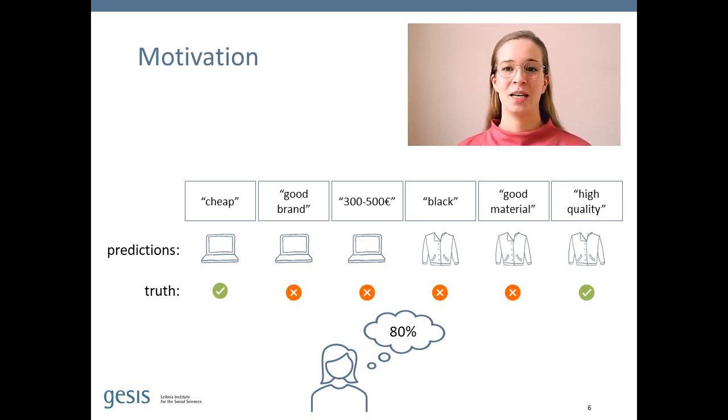And the ambiguity is data point specific. So you might have a data point that is very clear and easy to label for a human and in the same data set, another data point might be difficult and ambiguous.